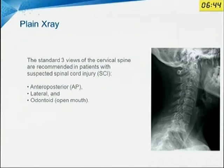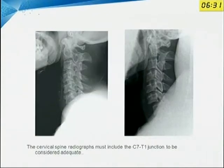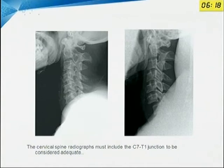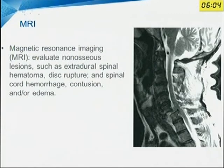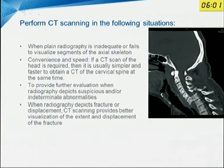For evaluation, we have to take X-rays. The standard AP, lateral, and odontoid open-mouth views are the standard recommendation for cervical spine. In cervical spine imaging, a subluxation at C6-7 can be missed without proper positioning. The cervical spine image should include the C7-D1 junction to be considered adequate. If you are not getting that, you have to go for a CT scan. A CT scan is indicated when plain radiograph is inadequate or fails to visualize the area.